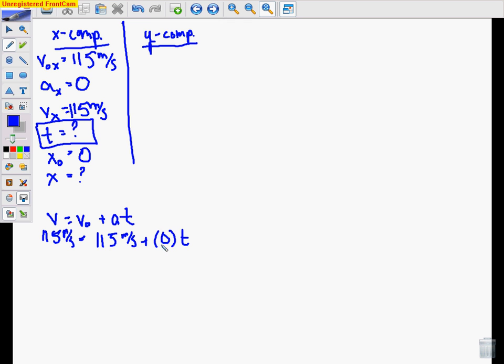we see that there's a problem. This would be 115 plus zero times T. So what happens to this term? This cancels out and we get 115 equals 115, something that we already knew. So this is not going to be helpful for us. We're going to have to go to the Y components and use those to solve this problem instead. So this method doesn't work.